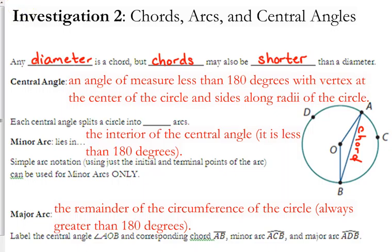Okay, so in this case, angle AOB is a central angle. O is the center of the circle. It is the vertex of that angle. That is what we consider a central angle.